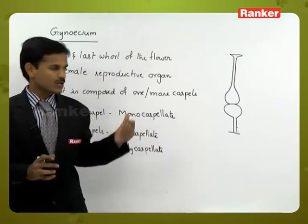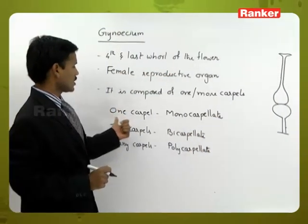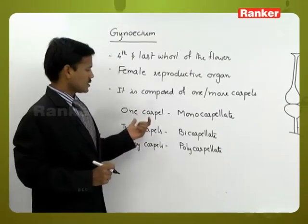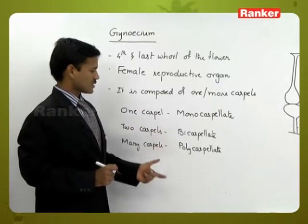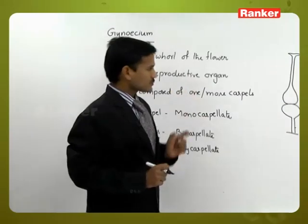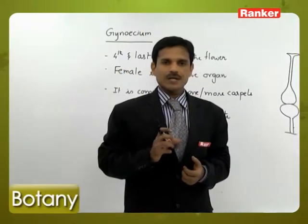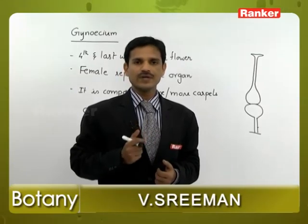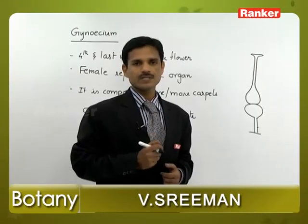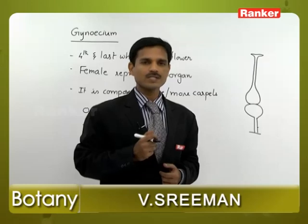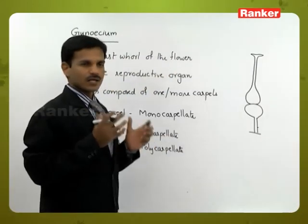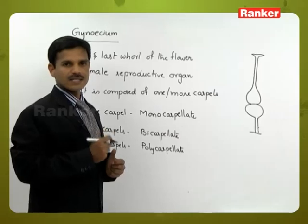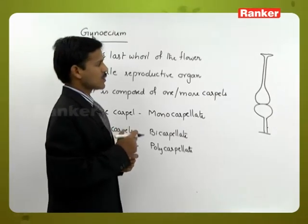Gynoecium is composed of one or more carpels. The carpels are sometimes fused and sometimes free. When the carpels are free, it is called Apocarpous ovary or Apocarpous Gynoecium. When the carpels are fused, it is called Syncarpous ovary or Syncarpous Gynoecium.